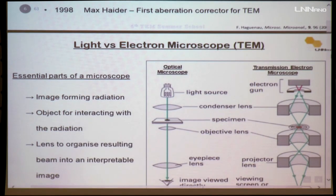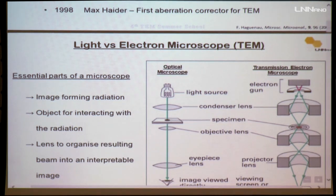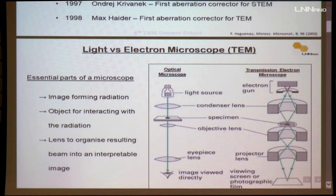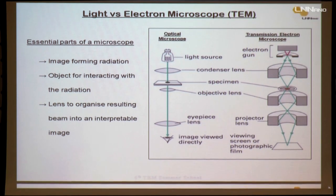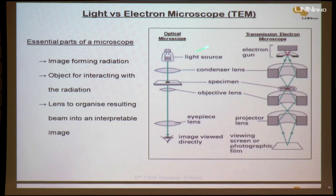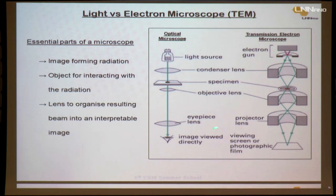To understand the TEM, it helps to compare it with the optical microscope. The TEM is not very different — it has a light source (replaced by an electron source), condenser lens, specimen, objective lens, eyepiece (projector lens), and a detector. The key differences are: first, glass lenses are replaced by electromagnetic lenses for focusing electrons; second, resolution. Resolution is defined as the closest distance between two points that can be clearly resolved as separate entities. Using the Rayleigh criterion, the best resolution from a light microscope is only 200 nanometers.